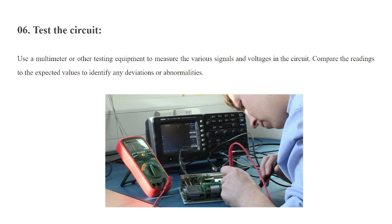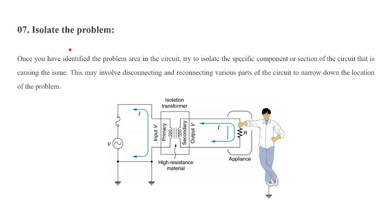If there are any deviations, you can recheck or change the components. The seventh step is to isolate the problem. Once you identify the problem or any area that is creating an issue, isolate that part. Once you identify the problem area in the circuit, try to isolate the specific component or section causing the issue. This may involve disconnecting or reconnecting various parts of the circuit to narrow down the location of the problem.